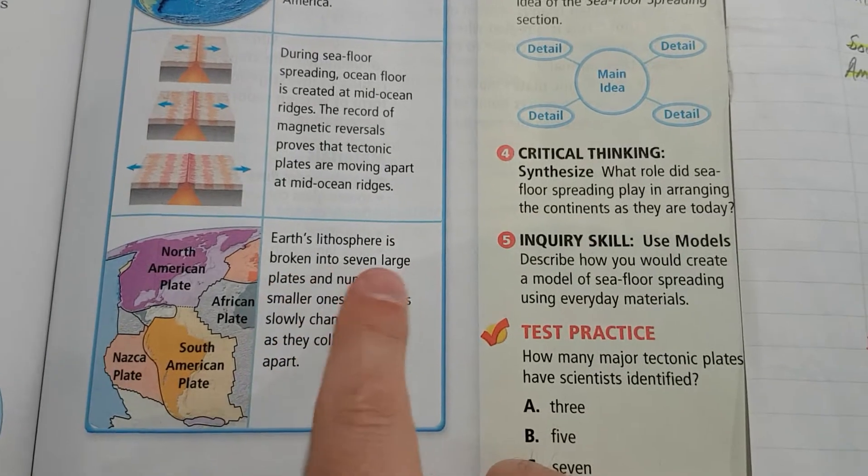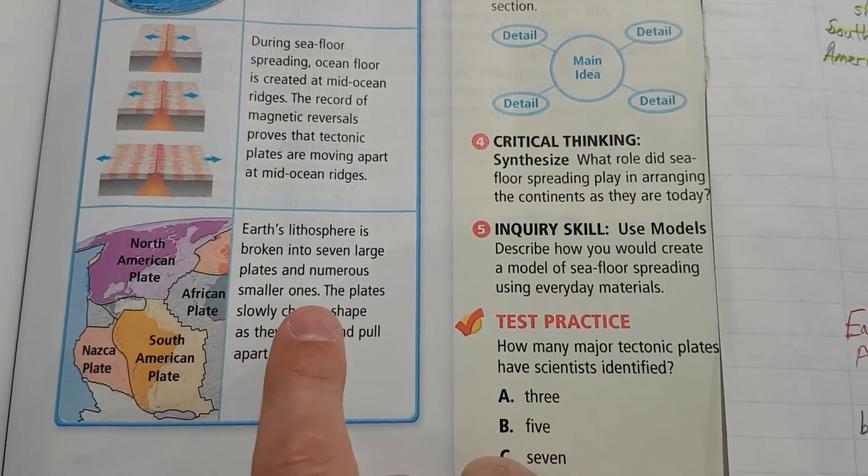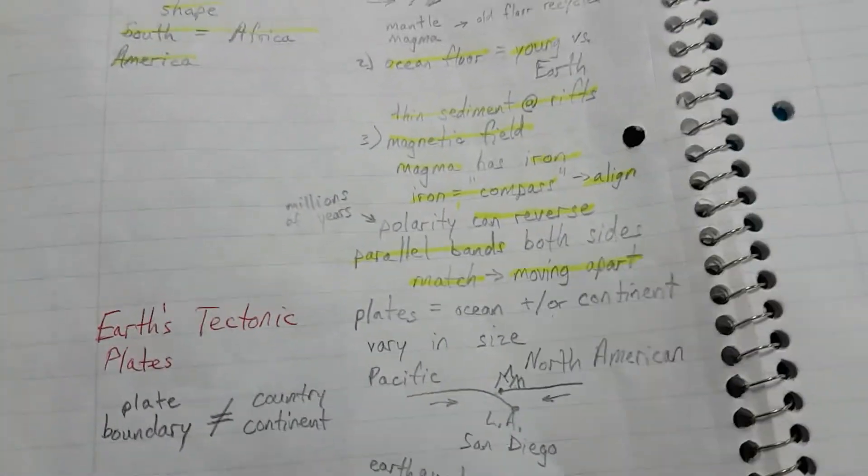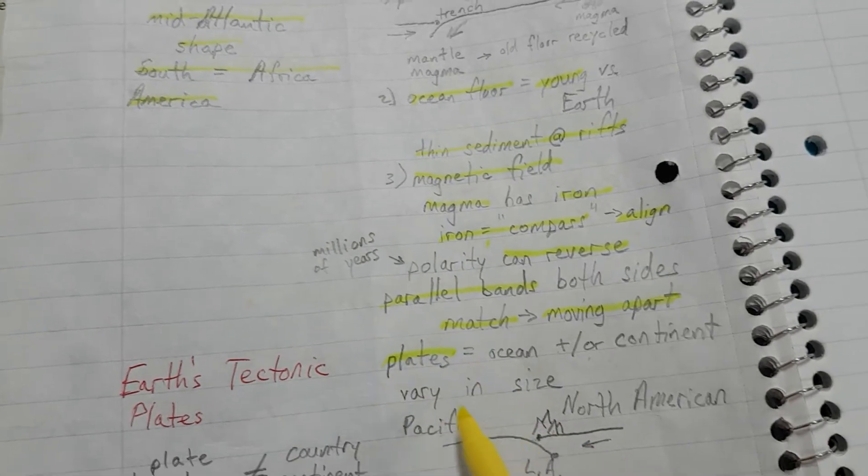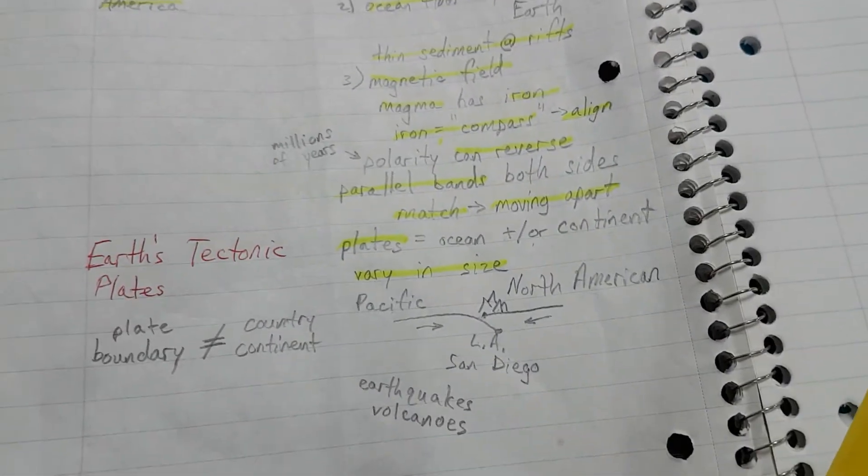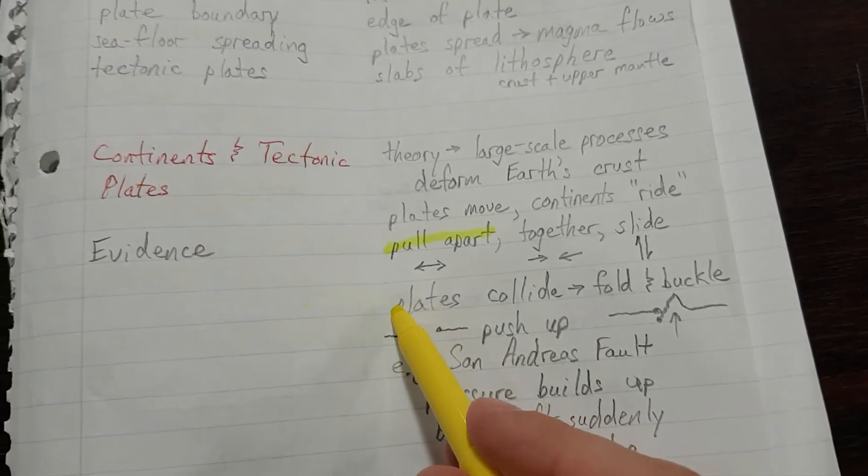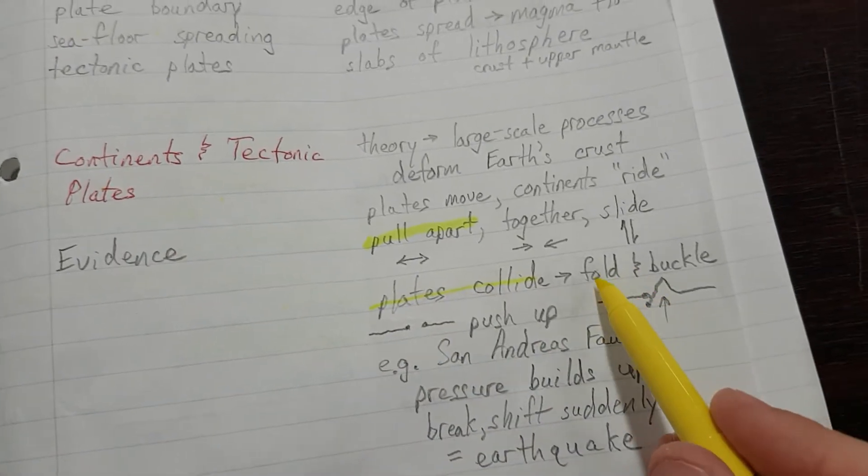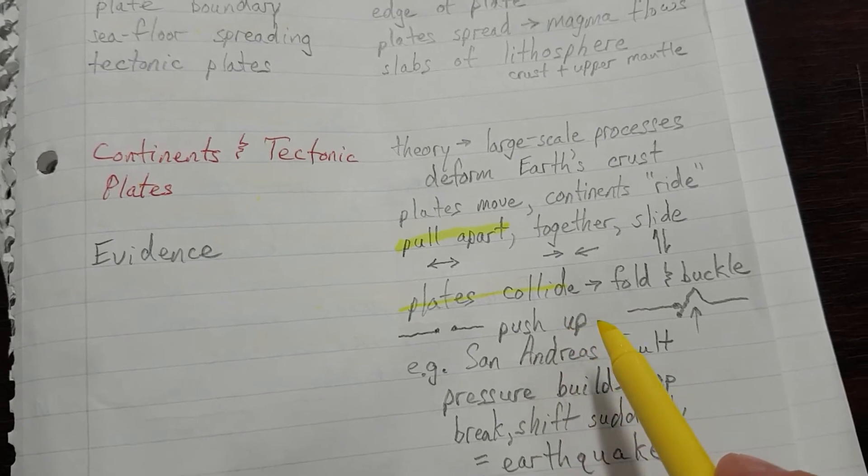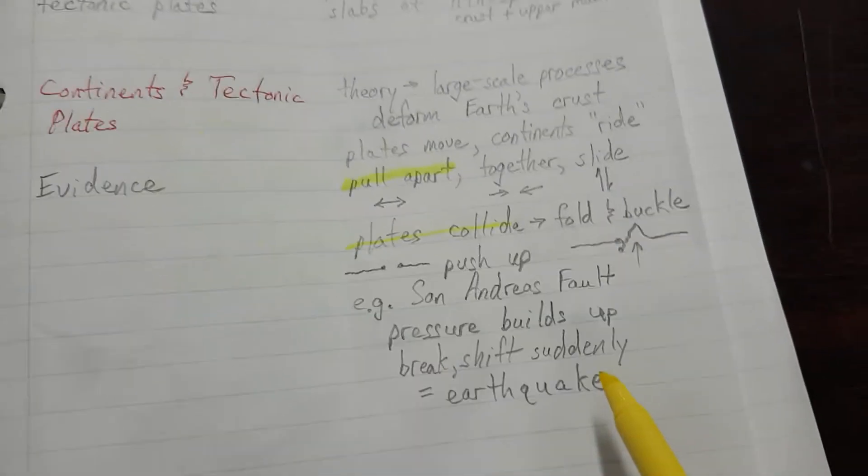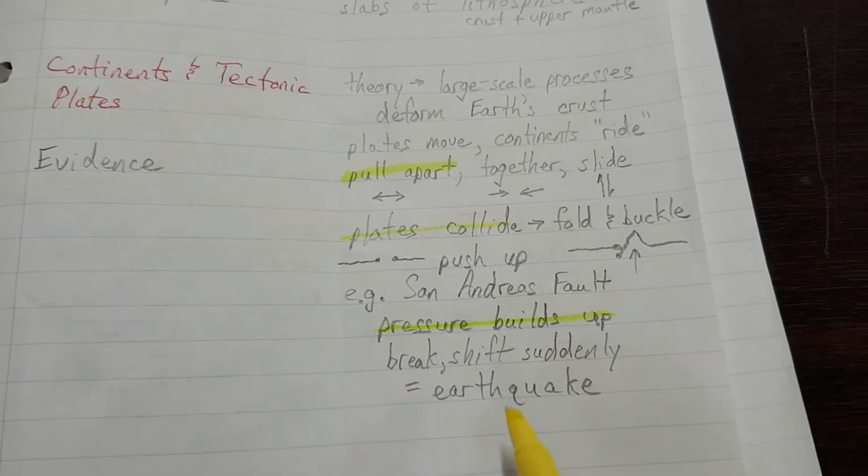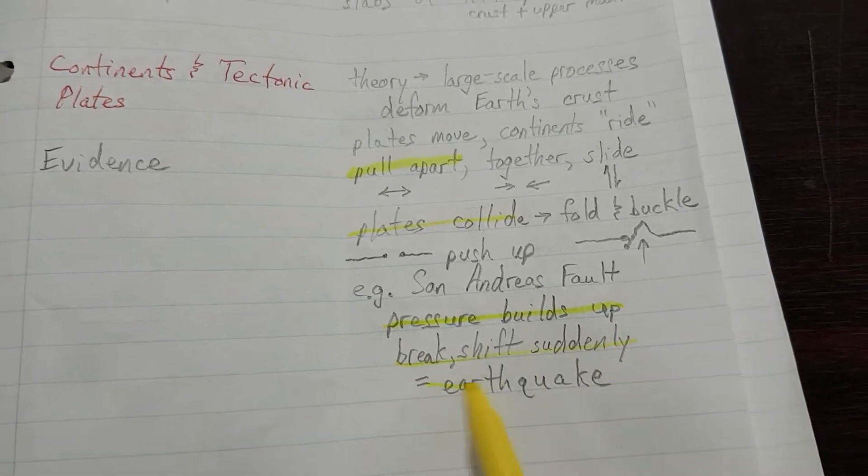Earth's lithosphere is broken into seven large plates and numerous smaller ones. All right. So, there are various plates. They vary in size. The plates slowly change shape as they collide and pull apart. Okay. Let's see. Where did we say that they can change? Plates collide. They can fold, buckle, push up. Let's see. When the pressure builds up, they can break or shift suddenly, and that's earthquakes.